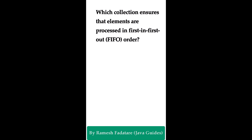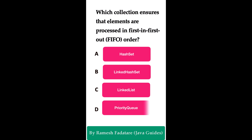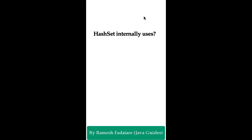Which collection ensures elements are processed in first-in, first-out order? Option A: HashSet. Option B: LinkedHashSet. Option C: LinkedList. Option D: PriorityQueue. The correct answer is LinkedList. In Java, LinkedList is commonly used to maintain first-in, first-out order when used as a queue. The LinkedList class implements both the List and Deque interfaces, allowing it to function as a queue. Other collections like HashSet, LinkedHashSet, and PriorityQueue do not guarantee FIFO ordering.